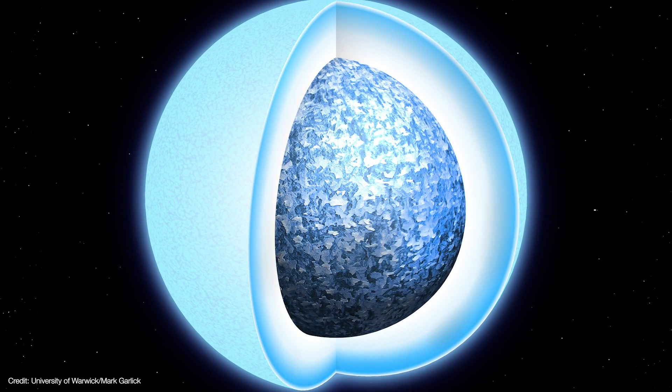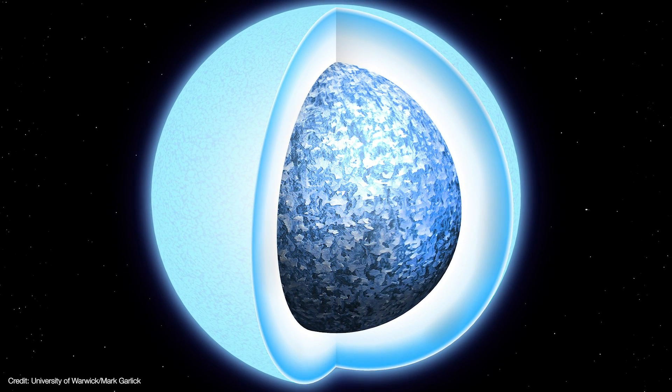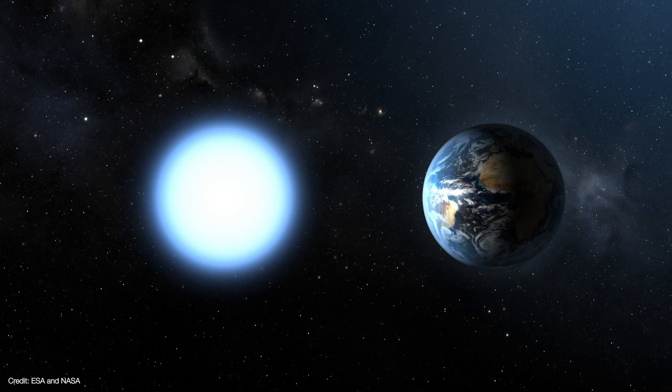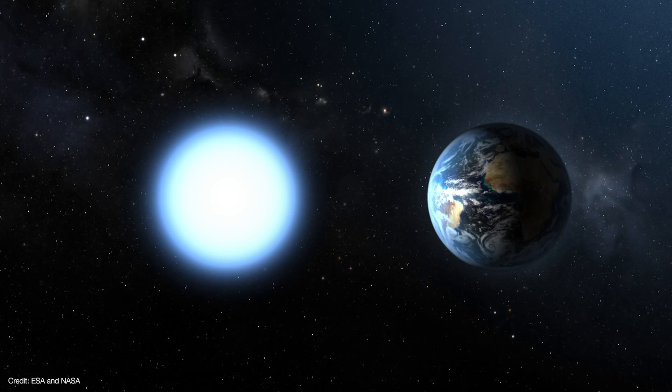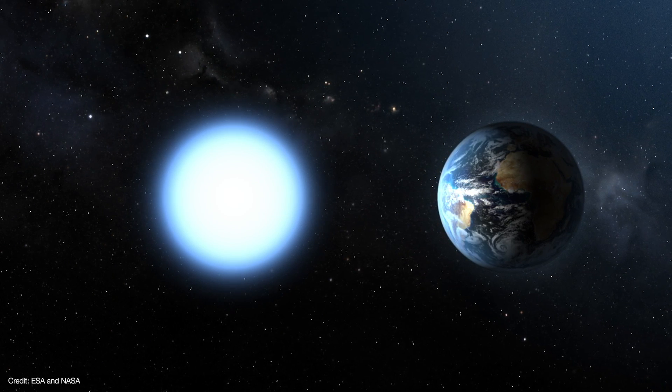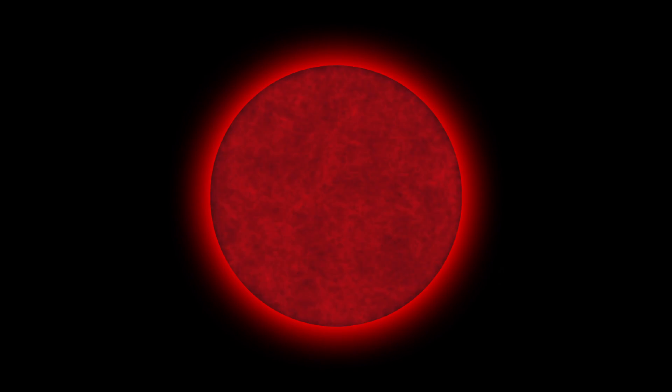But eventually the last of the hydrogen is burned and the star becomes a solid ball of helium. Without any radiation pressure to hold itself up, the star contracts under its own weight, squeezing down to the size of Earth in a ball of degenerate helium. It will spend the next few billion years radiating away its heat, first as a white dwarf, then eventually slowly fading away as a black dwarf. Perhaps our descendants will witness this final act of the universe as the last star fades to black.